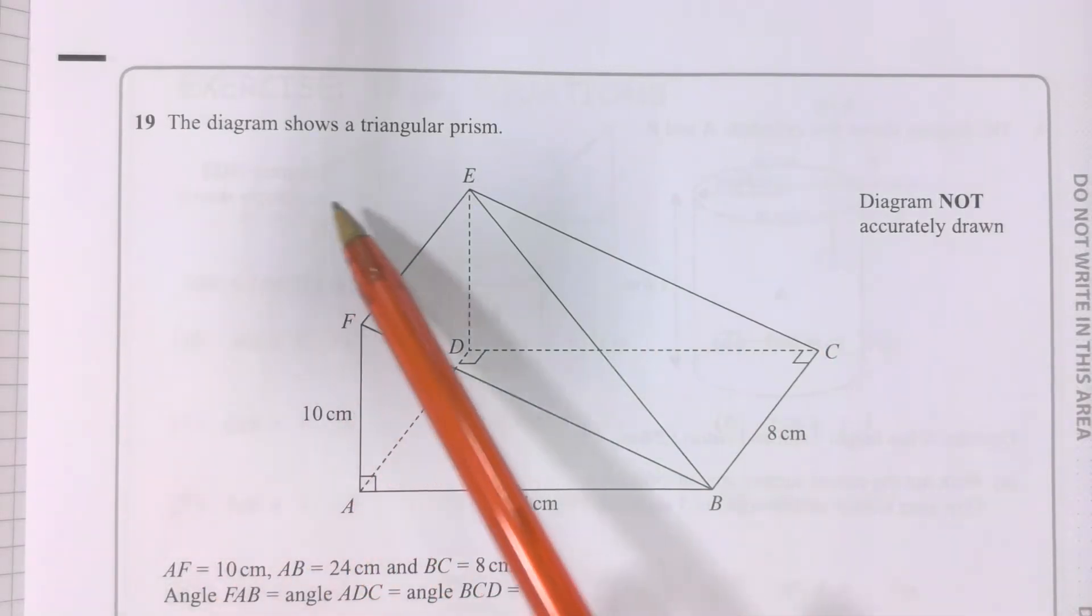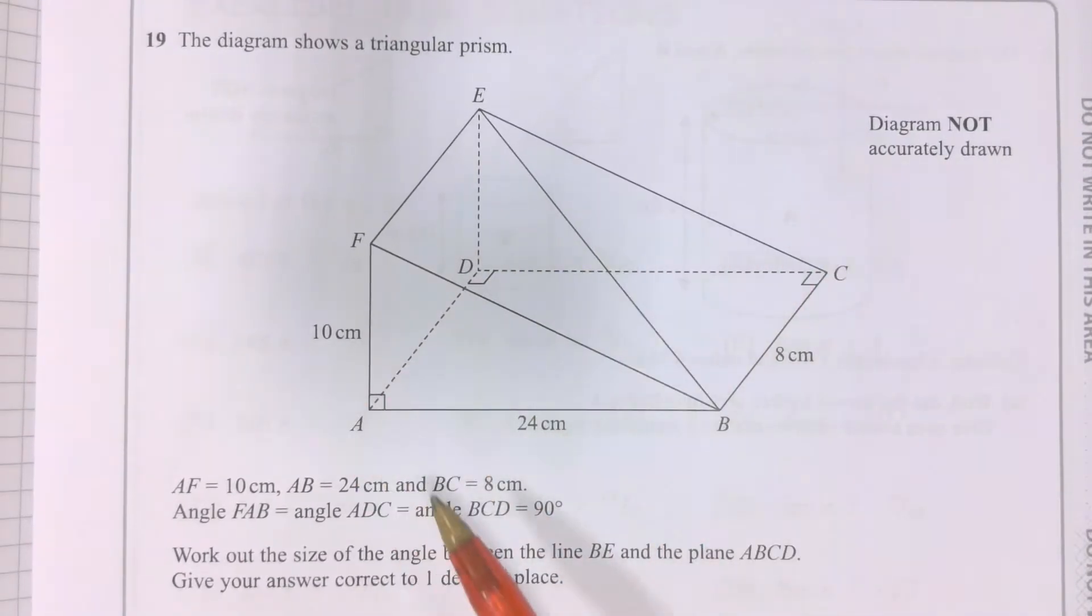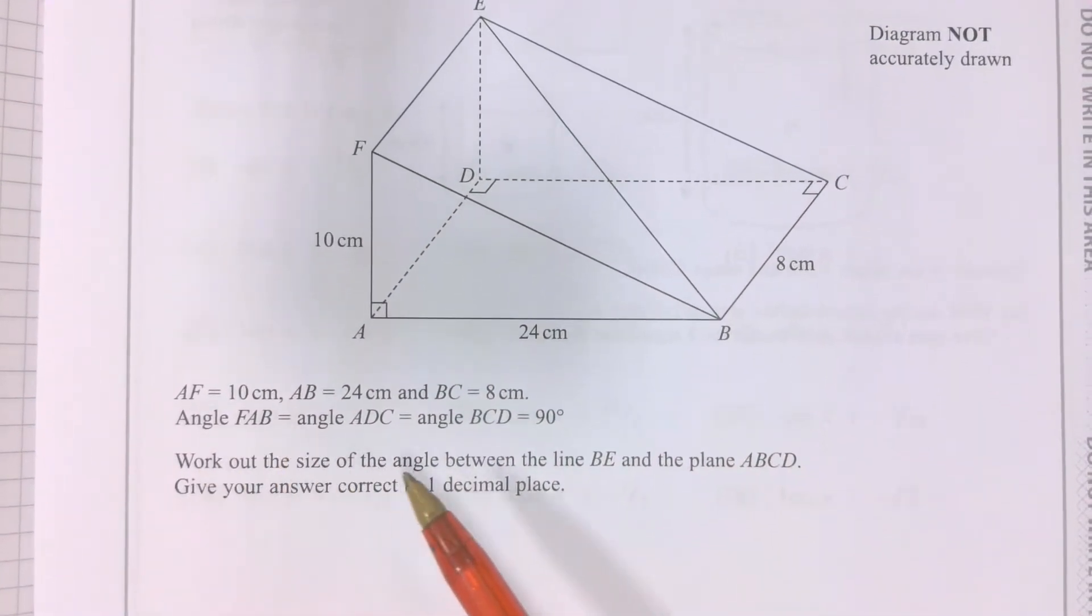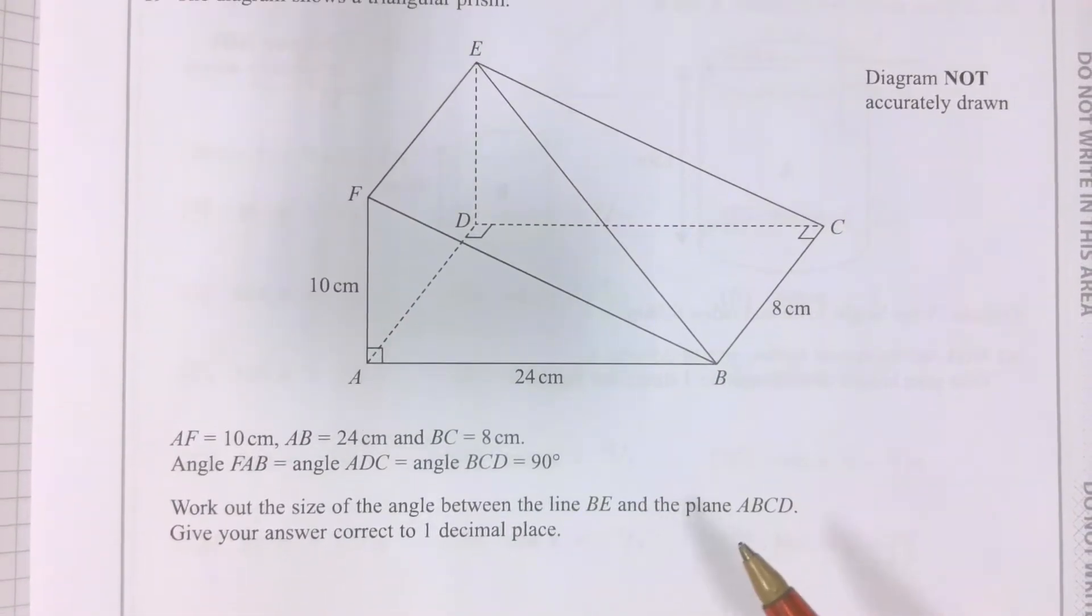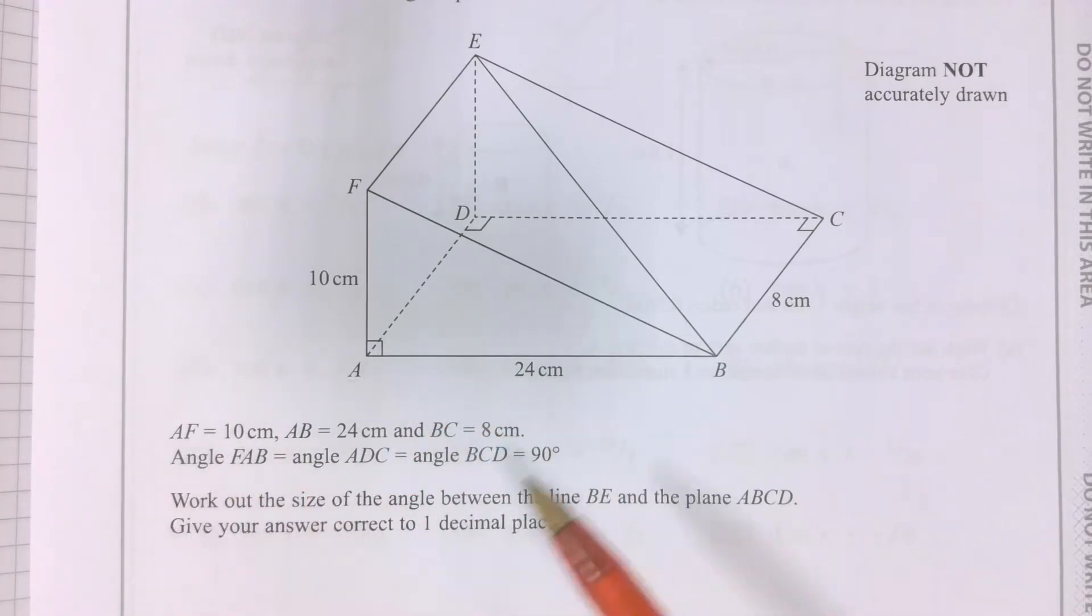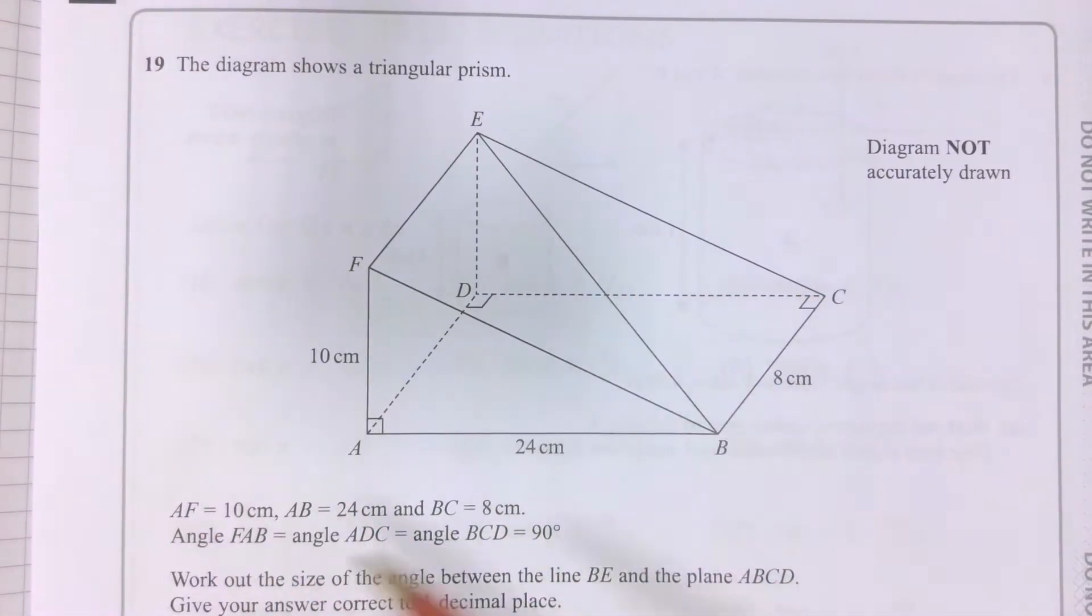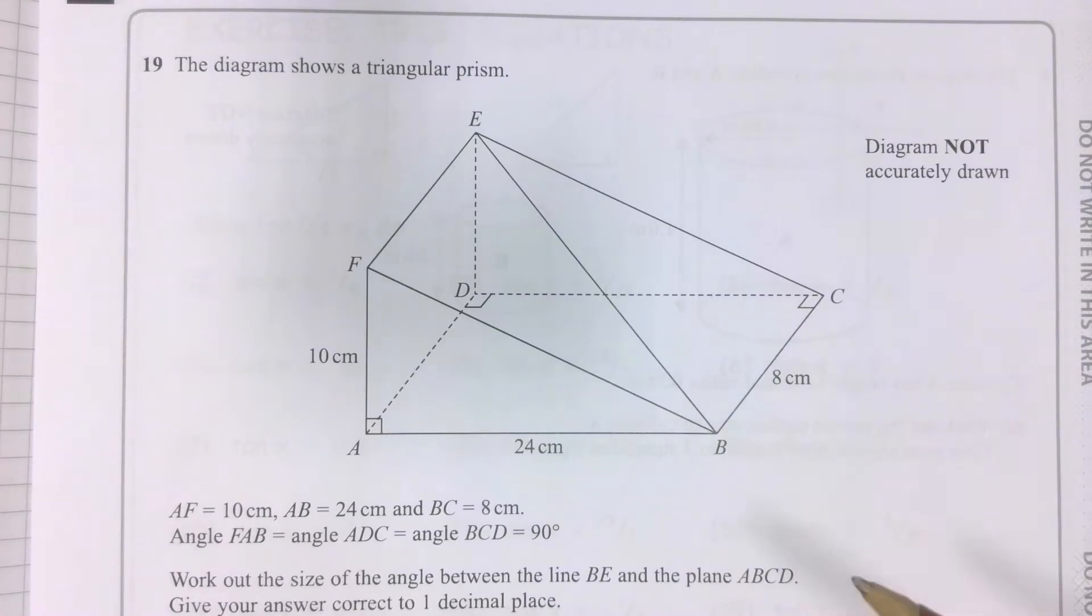The diagram shows a triangular prism. There it is. I'm asked to work out the size of the angle between the line BE and the plane ABCD. All of this information here is exactly the information I've got on the diagram.